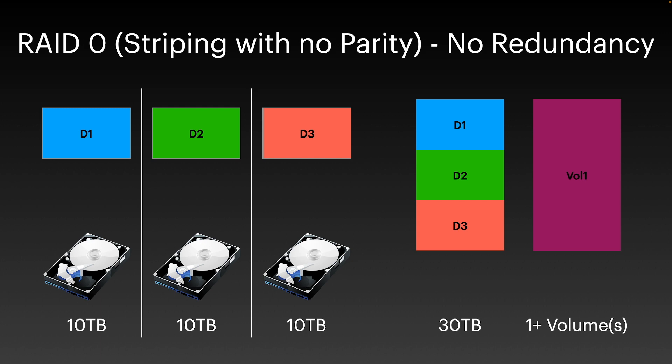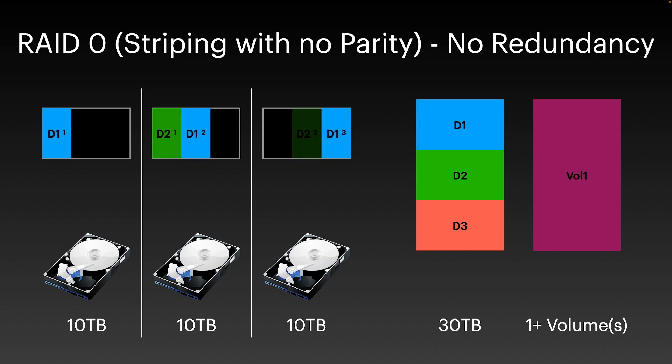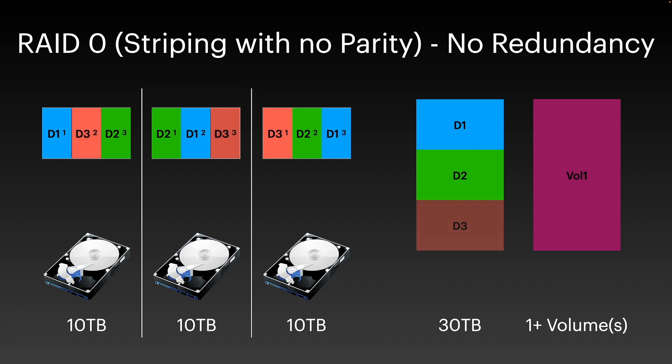Moving on from JBOD, we look at RAID 0. Despite being called RAID, it doesn't actually deliver the R for redundant, and this is why it's RAID 0. RAID 0 provides a very similar capability to JBOD — it provides no fault tolerance, but it does provide scale and performance benefits. All files are striped across all members of the array, so writing and reading files is performed across all these disks in parallel, and this provides some performance benefits for both reads and writes.